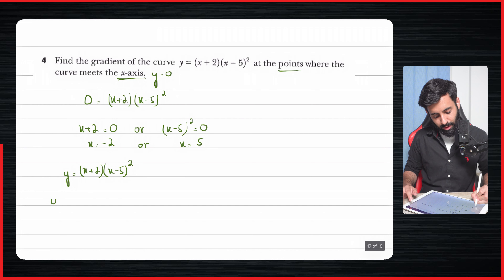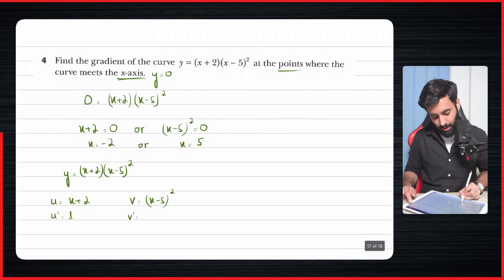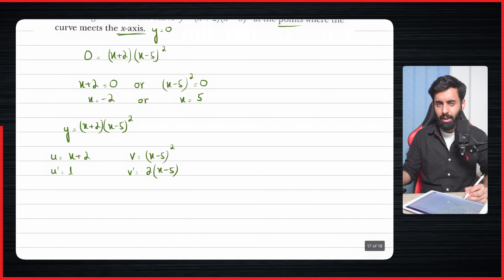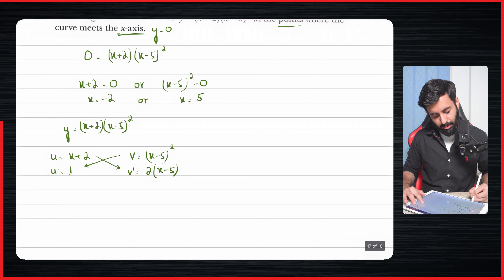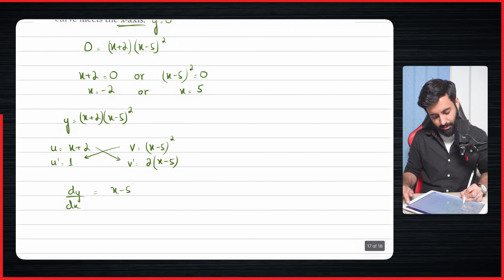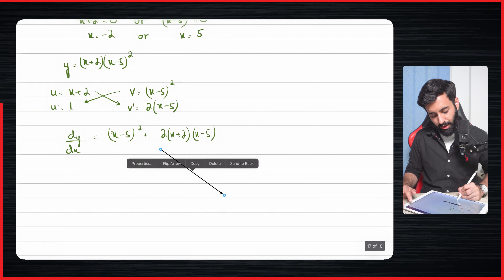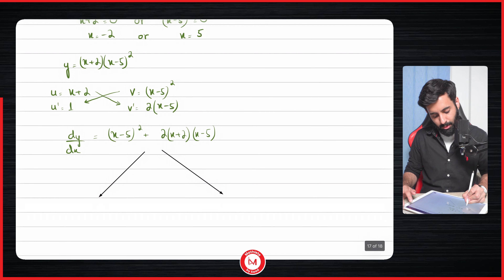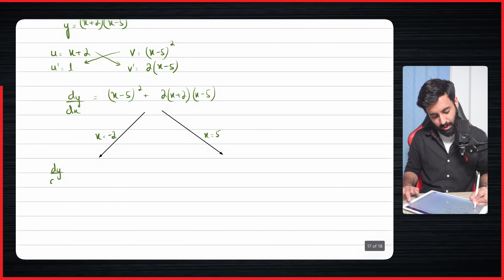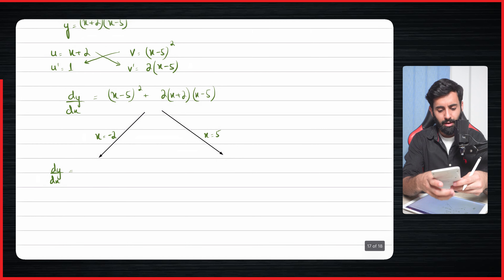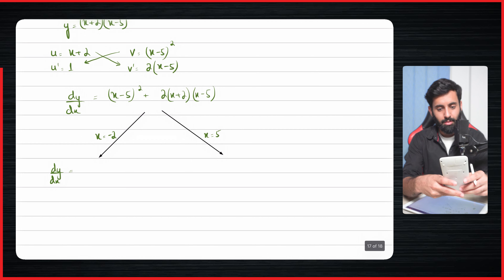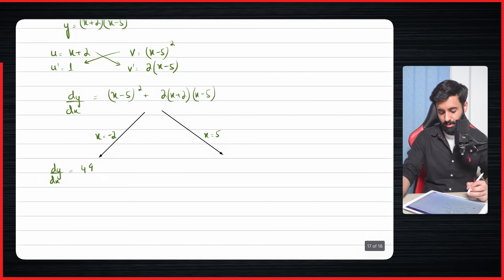Now differentiate y equals (x+2)(x−5)². Set u equals x+2, so u prime equals 1; v equals (x−5)², so v prime equals 2(x−5). Therefore dy/dx equals v·u′ plus u·v′ equals (x−5)² plus 2(x+2)(x−5). Now substitute both x-values: first plug in x=−2, which gives (−2−5)² plus 2(−2+2)(−2−5) equals 49 plus 0 equals 49.